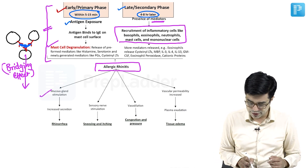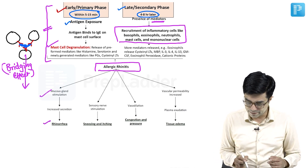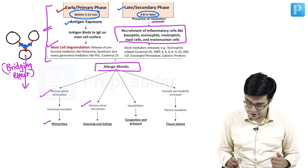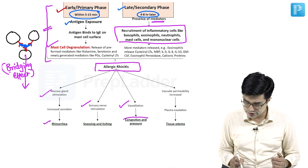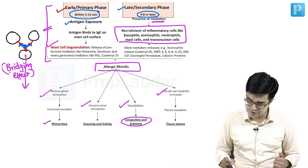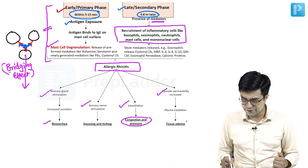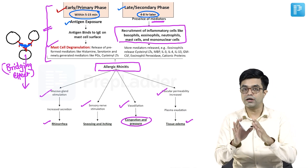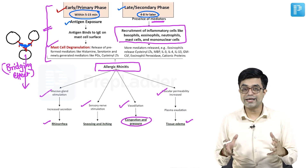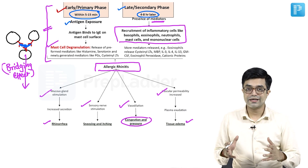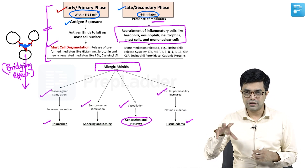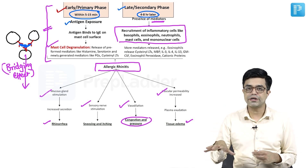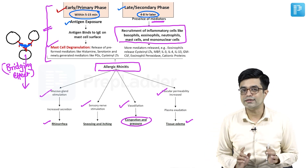There will be mucus gland stimulation causing rhinorrhea. There will be sensory stimulation causing sneezing and itching. There will be vasodilatation causing congestion and pressure. There will be increased vascular permeability causing tissue edema or local mucosal edema. This is the complex pathogenesis, explained based upon Nelson and two other review articles combined.